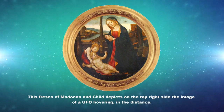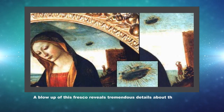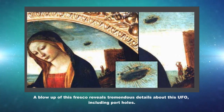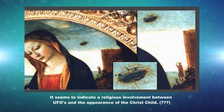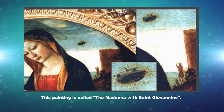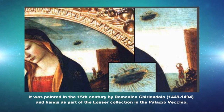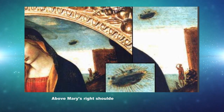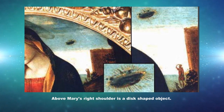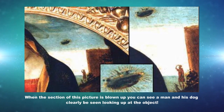Madonna and Child: this fresco of Madonna and Child depicts on the top right side of the image a UFO hovering in the distance. A blow-up of this fresco reveals tremendous details about this UFO, including portholes. It seems to indicate a religious involvement between UFOs and the appearance of the Christ child. This painting is called The Madonna with Saint Giovannino, painted in the 15th century by Domenico Ghirlandaio (1449–1494), and hangs as part of the Loser collection in the Palazzo Vecchio. Above Mary's right shoulder is a disc-shaped object, and when that section is blown up, you can clearly see a man and his dog looking up at the object.